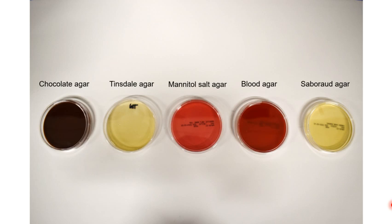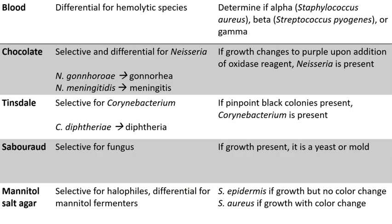The plates that the samples will be inoculated onto include the chocolate agar plate, the Tinsdale agar plate, the mannitol salt agar plate, the blood agar plate, and the Sabouraud agar plate. Some of these plates you've seen before — for example, the mannitol salt agar plate and blood agar plate from our differential and selective media lab, and you've also been exposed to the Sabouraud agar plate. We're going to go over each of them and their functions here.